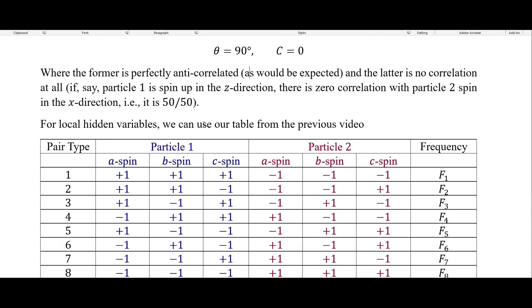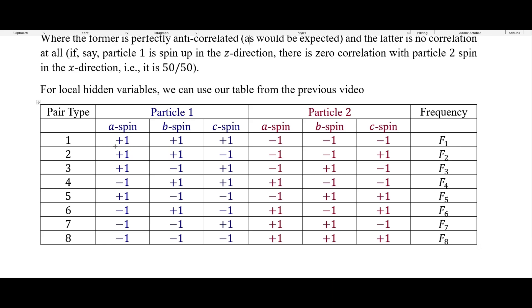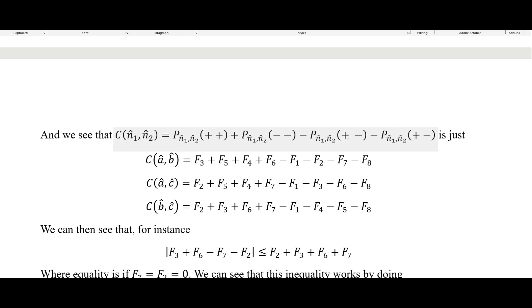For local hidden variables, we can use our table here from the previous video. So we're looking at the spin of particle one in three different directions and the spin of particle two in three different directions, where we see if particle one is in the plus one in the a direction, then particle two has to be negative one in the a direction, and so on and so forth. So for particle one and particle two, it's always just anti-correlated for each of those. So we see that our correlation coefficient here for each of these is just these. So the correlation coefficient for A and B is equal to this, for A and C is equal to this, and for B and C is equal to this third one here.